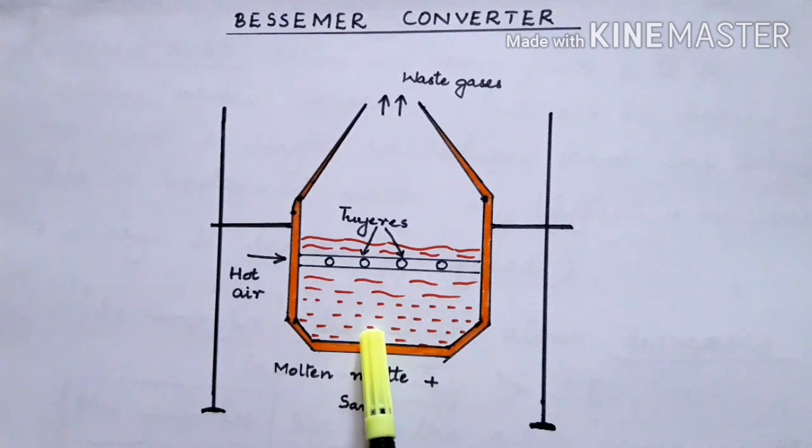We are mixing it with copper matte and sand. So you find that copper matte contains Cu2S, FeS, and sand will provide silica. So what happens is, at high temperature there is a reaction between FeO and SiO2 and it will result in FeSiO3.